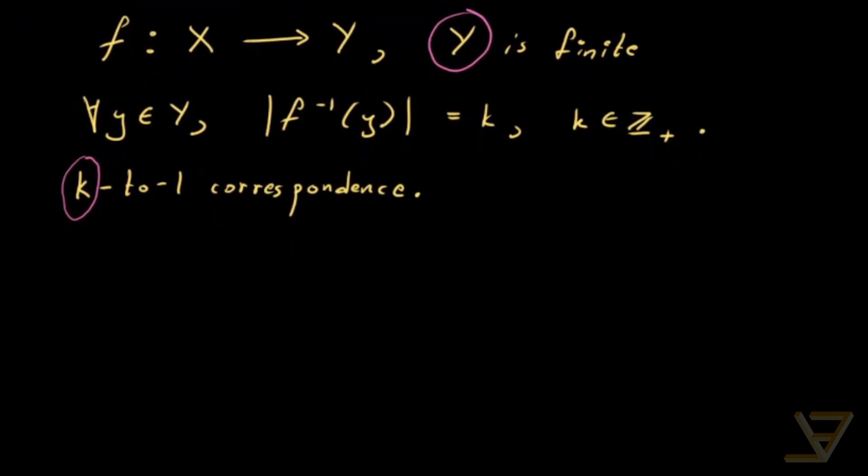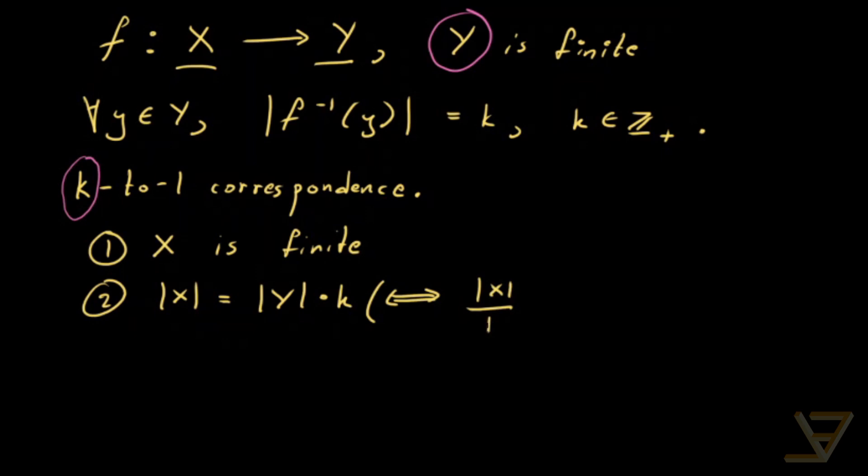What we want to prove is a relationship between the cardinalities of X and Y. So what I claim is that, first of all, if Y is finite, then X is finite. And secondly, the cardinality of X is equal to the cardinality of Y times k, which is often written instead as the cardinality of X over k is equal to the cardinality of Y.